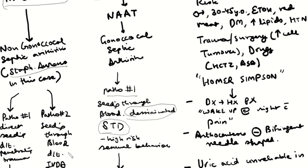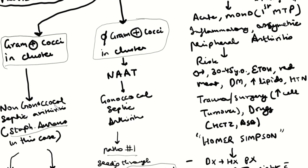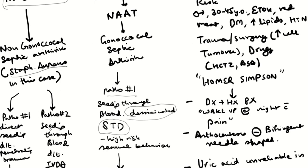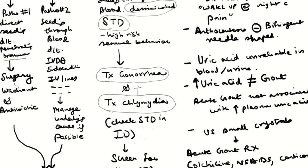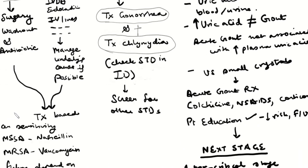For non-gonococcal septic arthritis, chances are it's Staph aureus. How does Staph aureus infect the joint? One route is penetrating trauma — a foreign body enters the joint, seeding it with environmental pathogens. Penetrating trauma cases are generally taken straight to surgery for washout, cleaning, repair, and antibiotics.